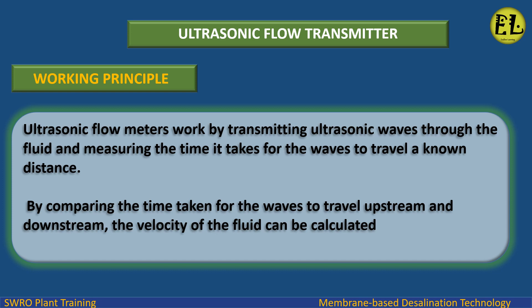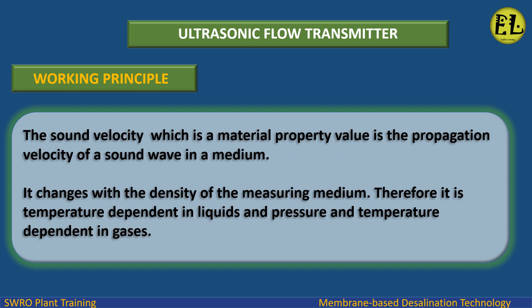Working principle: Ultrasonic flow meters work by transmitting ultrasonic waves through the fluid and measuring the time it takes for the waves to travel a known distance. By comparing the time taken for the waves to travel upstream and downstream, the velocity of the fluid can be calculated. The sound velocity, which is a material property value, is the propagation velocity of a sound wave in a medium. It changes with the density of the measuring medium, and is therefore temperature dependent in liquids, and pressure and temperature dependent in gases.